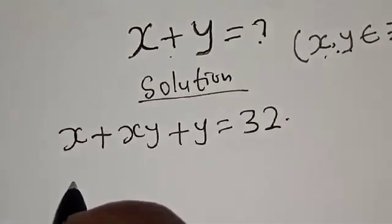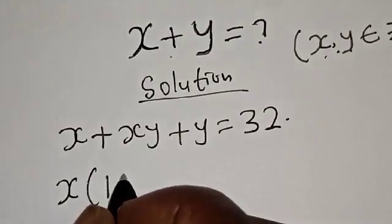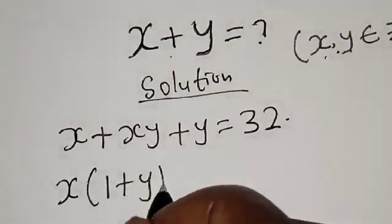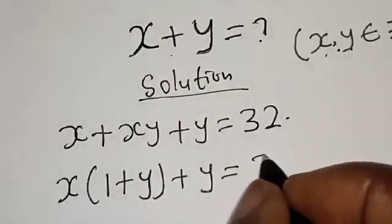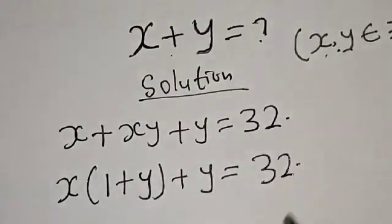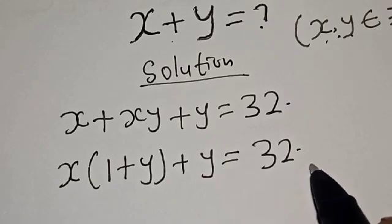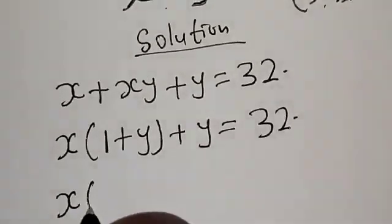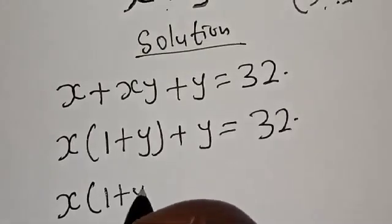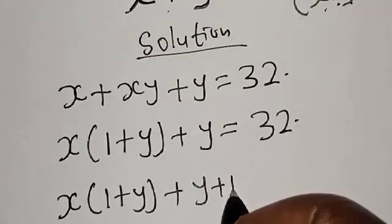Solution: we have the given equation x plus xy plus y equal to 32. Let's factor x out. We have x into one plus y, plus y, is equal to 32. Now here we have one plus y and here is y, and x is outside. We can add one to both sides.